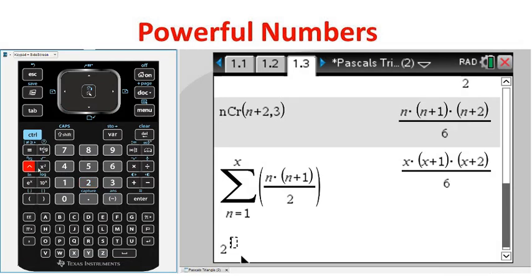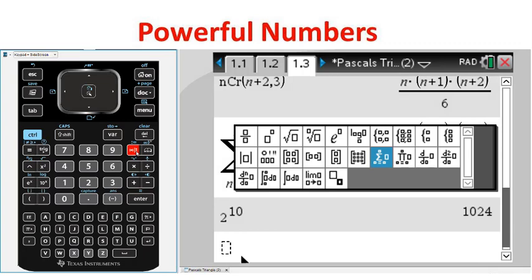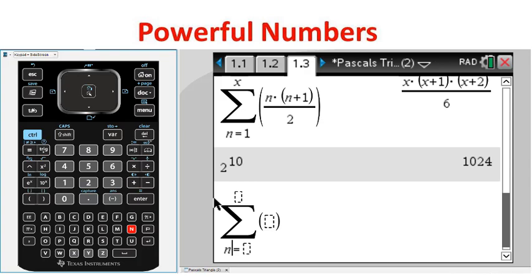We can use the sigma notation on the calculator to find the sum of any given row in Pascal's triangle, and compare this to the corresponding power of 2.